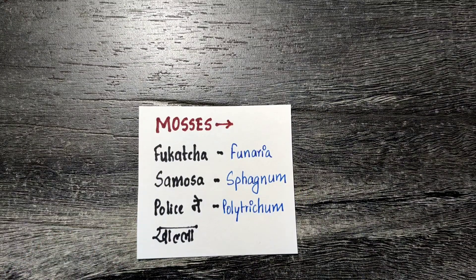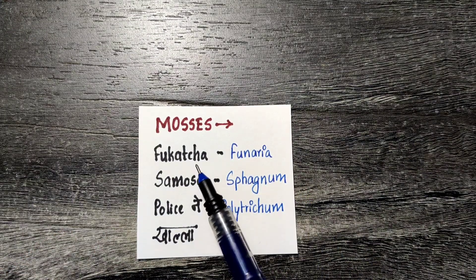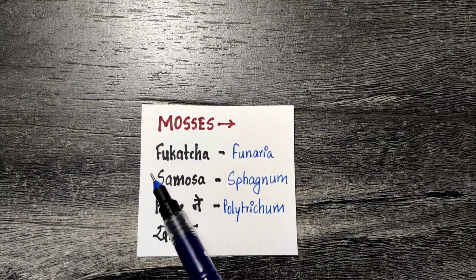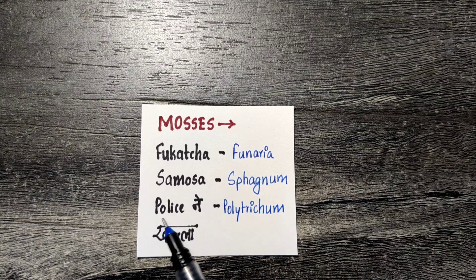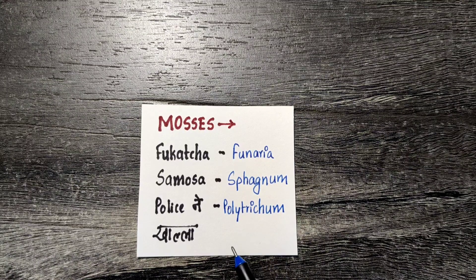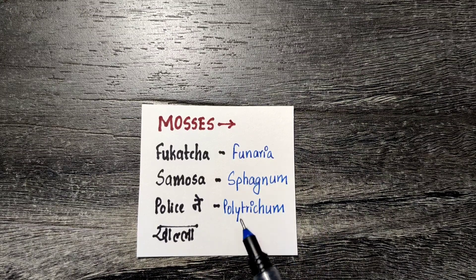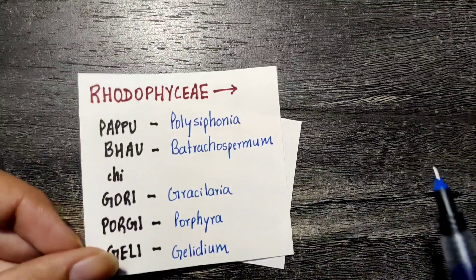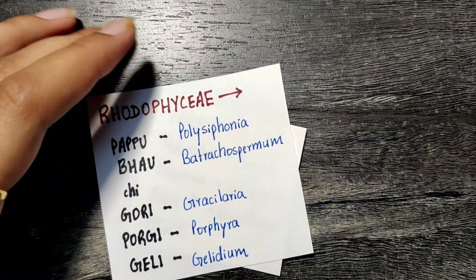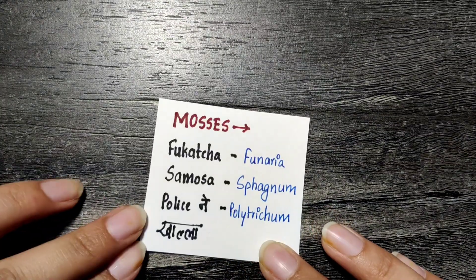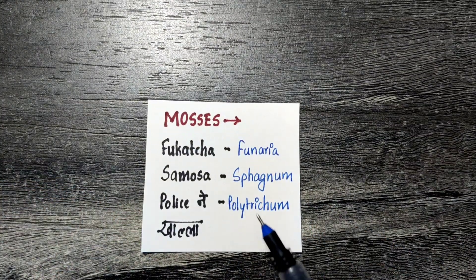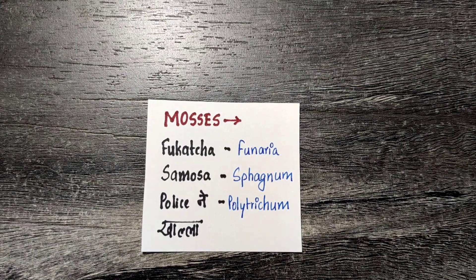The second part of Bryophytes is mosses. The trick is 'fukarza samosa polis ne ghelea': Fu is Funaria, S is Sphagnum, and Pol is Polytrichum. Important note: Polysiphonia is in Rhodophyceae while Polytrichum is in mosses — please remember this difference and don't get confused.